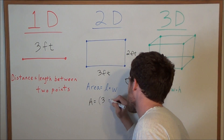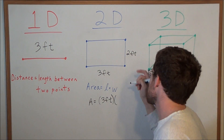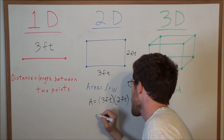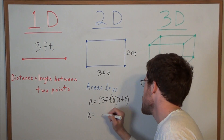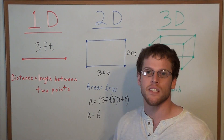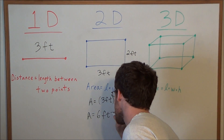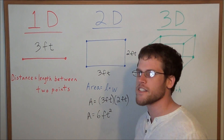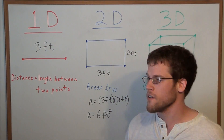We have the length is three feet times the width, which is two feet. When we simplify this, area equals three times two is six. This part is important: feet times feet is feet to the second power. But we could also say feet squared or square feet.